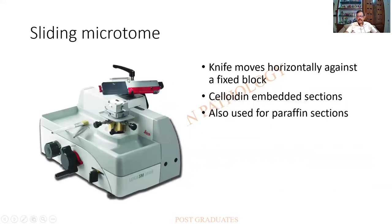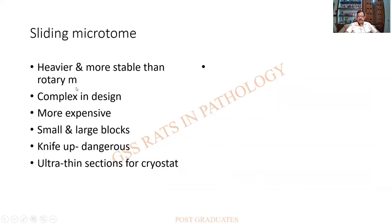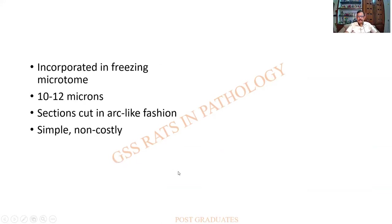The sliding microtome is another modification in which the knife moves in an arc-like manner against a fixed block, resulting in sections that are slightly arc-shaped. Celloidin embedding sections can be used with it. It is heavier and more stable than a rotary microtome but complex in design and expensive. It is used for cutting small and large blocks, though the knife position is quite dangerous and can damage the technician. Sections are thicker — 10 to 12 microns — and cut in an arc-like manner, which is a disadvantage. However, it is relatively simple and not very costly.